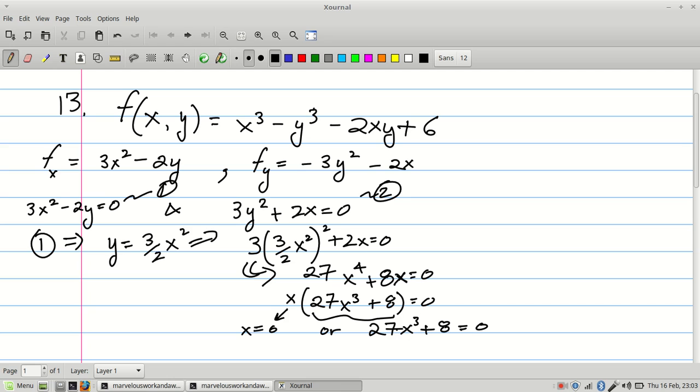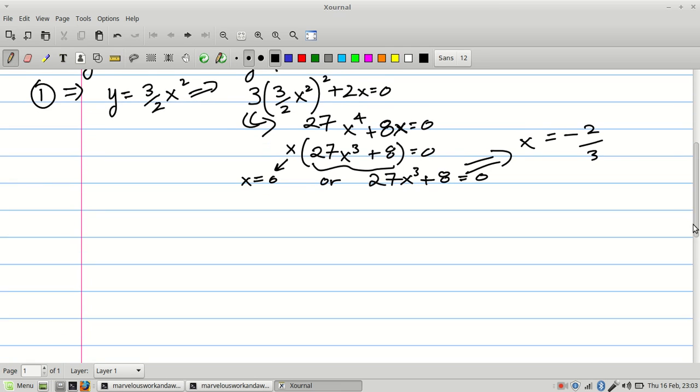If I end up isolating for x, what that will give me is that x cubed equals negative 8 over 27. And these are perfect cubes. So if I take the cubed root of both sides, that will leave me with negative 2 on the top and 3 on the bottom. So I just figured out my two x coordinates.